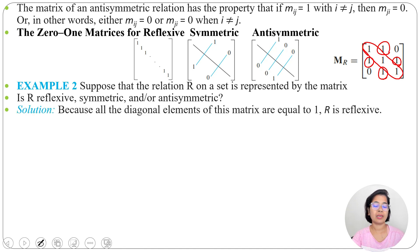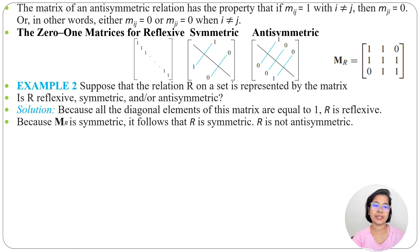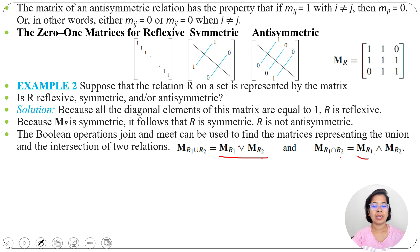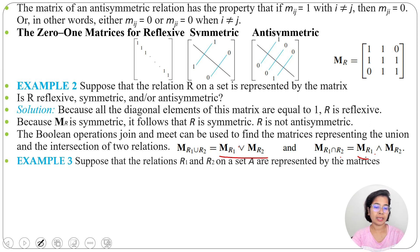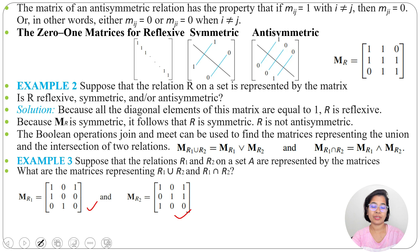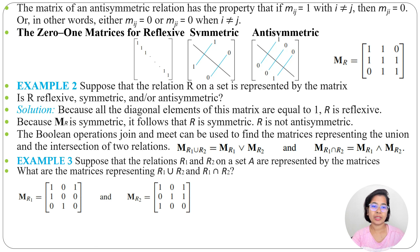We can also do binary operations over relations just as we do over matrices. So M(R1 ∪ R2) equals M(R1) OR M(R2), and M(R1 ∩ R2) equals M(R1) AND M(R2). Suppose relations R1 and R2 on a set A are represented by matrices. We need to find R1 union R2 and R1 intersection R2. Even XOR and all other binary operations can be applied.